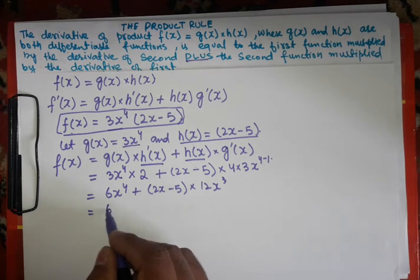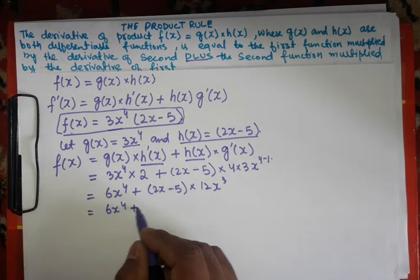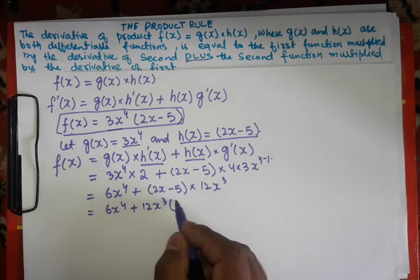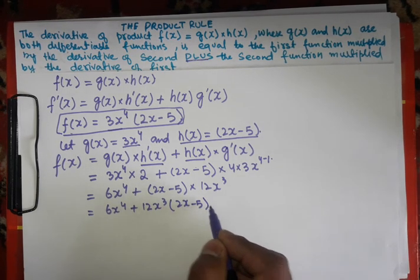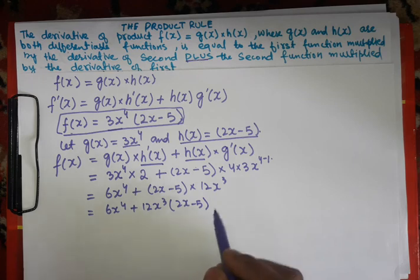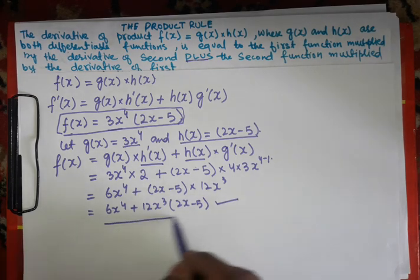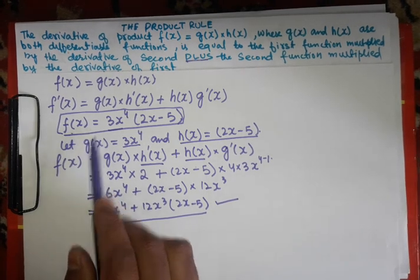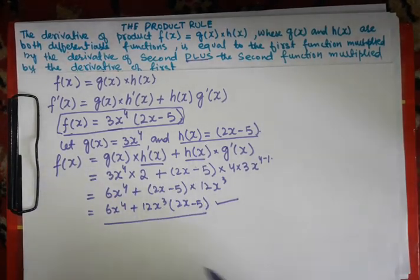So this will become 6x to the power 4, plus 12x cubed times (2x minus 5). This is the differentiation of this function using the product rule. Hope you enjoy the video.